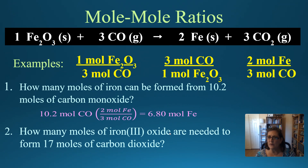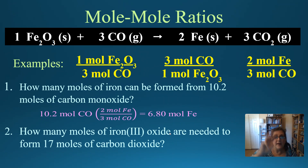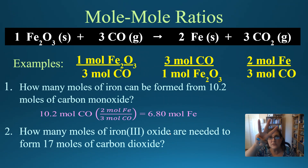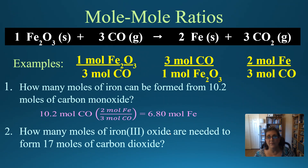Why do we add a zero to the end to get 6.80? Because we need three significant figures. Mole ratios are exact — it's exactly two moles of Fe to three moles of CO. What we started with had three sig figs, so we need to end with three sig figs: 6.80 moles of Fe.